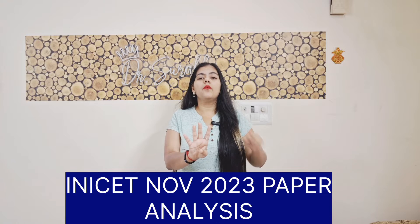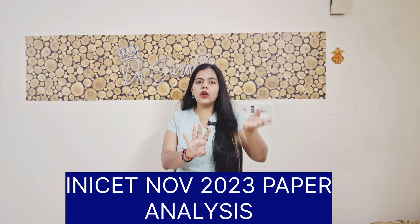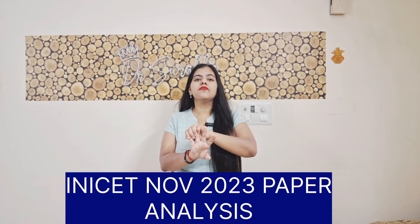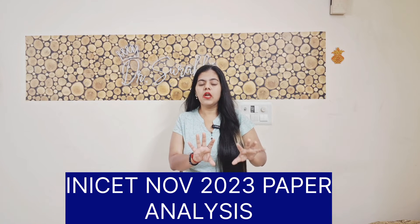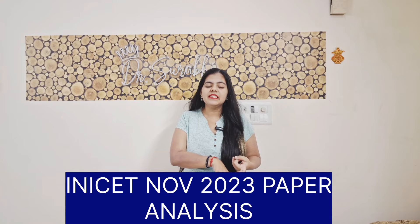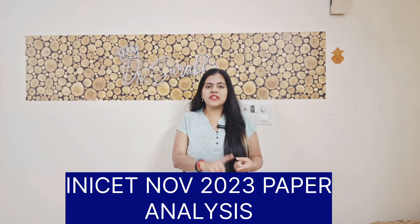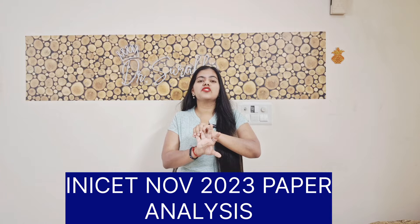According to the new pattern, there are four sections: Section A, B, C, and D (or Section 1, 2, 3, and 4). The third and fourth sections were completely filled with repeated questions from past papers — including INICET past papers, NEET MDS 12 to 14 years past papers, and AIIMS SR past papers.